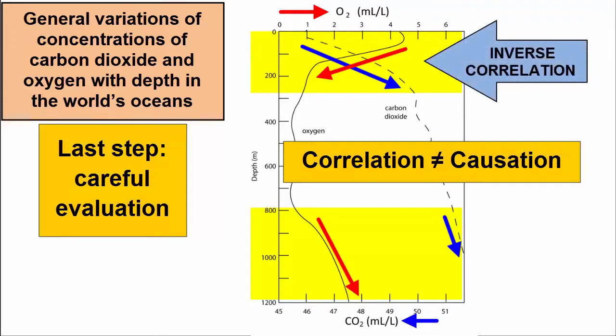In the graph, we see inverse correlation at the surface. Below 800 meters, there is a correlation for the same parameters, so we can't apply a simple causation model because the data contradict that. However,